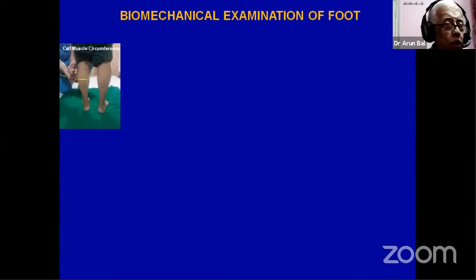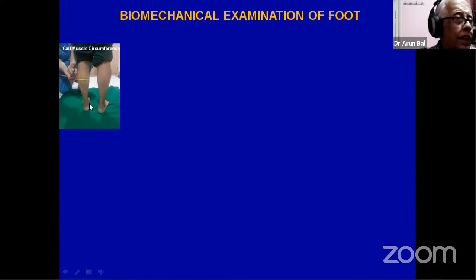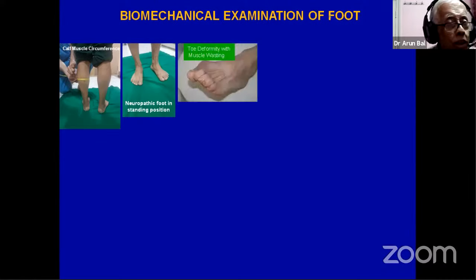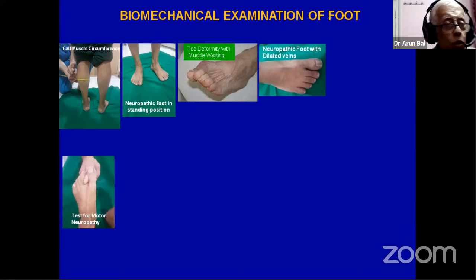In biomechanical examination, always measure the circumference of the calf. If one calf circumference is less than the other, diabetic neuropathy cannot cause unilateral muscle loss — there is some spinal problem. You also need to see how the patient is standing. A neuropathic foot shows toe deformities, prominence of dorsal tendons due to intrinsic muscle weakness, and dilated dorsal veins — all telling you about the neuropathy.